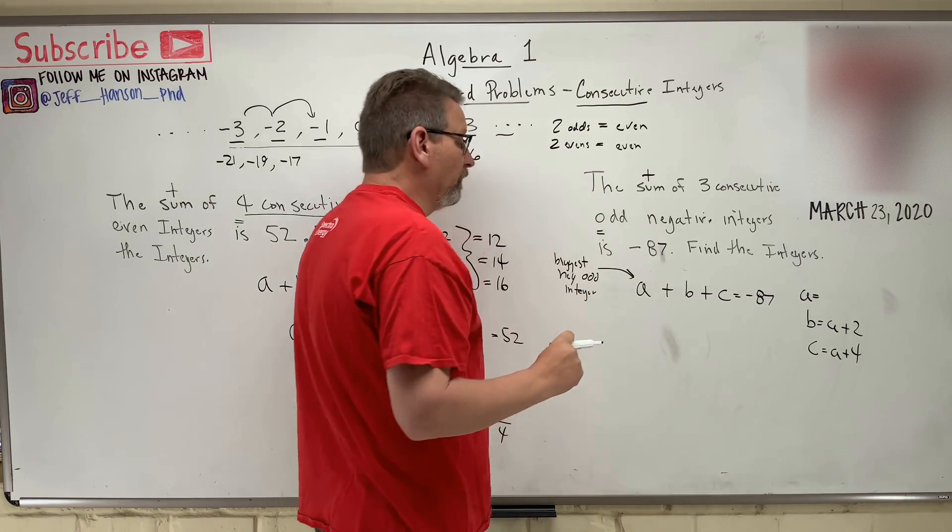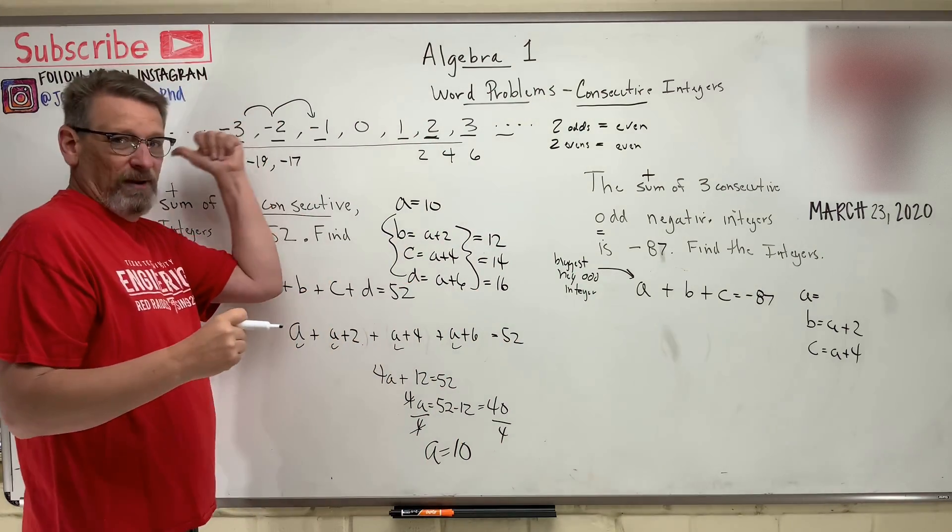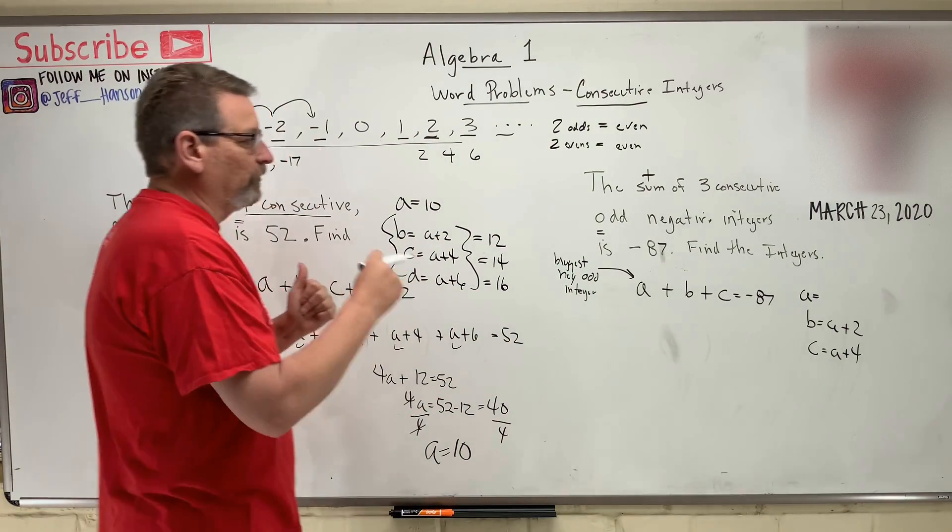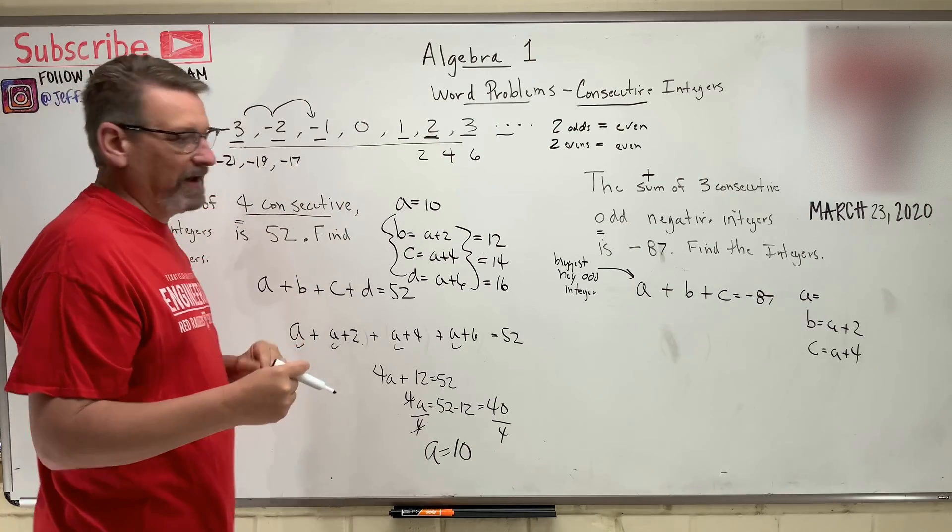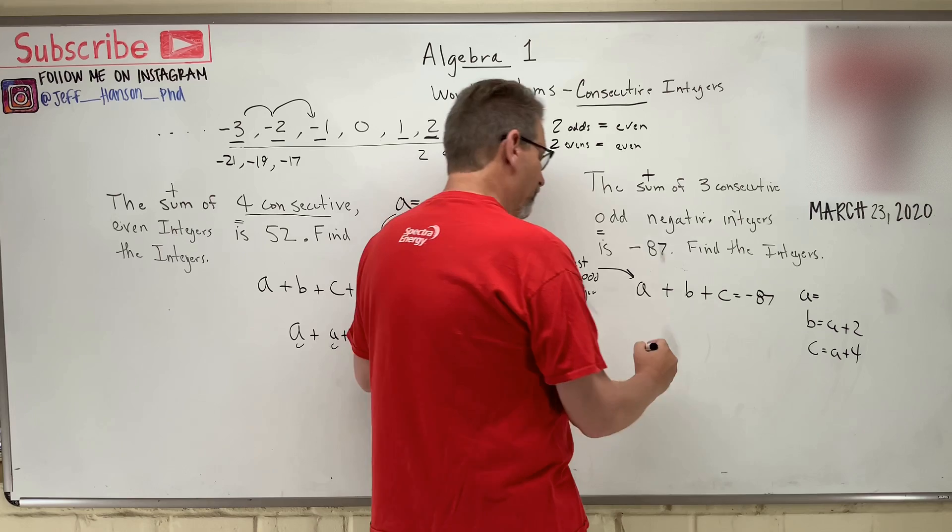So when we solve for A, he's going to be the farthest that way down the number line, okay? And then the next two, B and C, are going to be one back and then one back from that, right? Okay, so here we go. Let's substitute in just like we did over here.